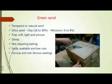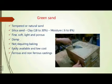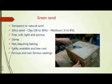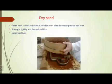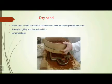Green sand is a natural and tempered sand. Its constituents are silica sand, clay, and moisture — clay is 18 to 30 percent and moisture is 6 to 8 percent. Next is dry sand — dry sand is nothing but green sand that has been dried in a suitable oven after making the mold.